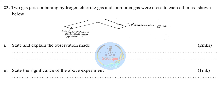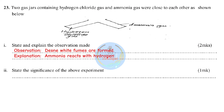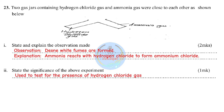Question twenty-three: two gas jars containing hydrogen chloride and ammonia are brought close together. Hydrogen chloride reacts with ammonia to form ammonium chloride, observed as white dense fumes. The significance of this experiment is that it is used as a test for the presence of hydrogen chloride gas.